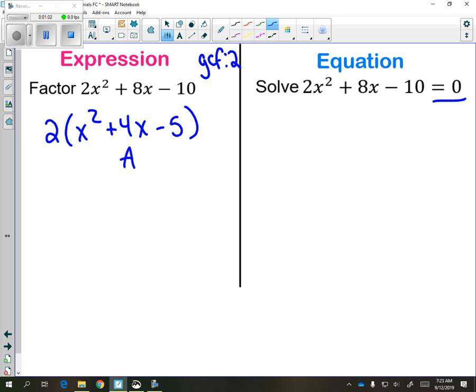We can use the AM method to find two numbers that multiply to negative 5 and add to 4. Those two numbers are going to be positive 5 and negative 1.